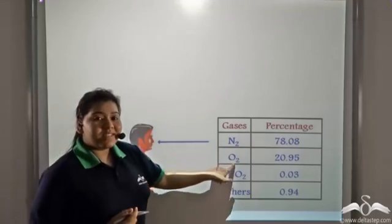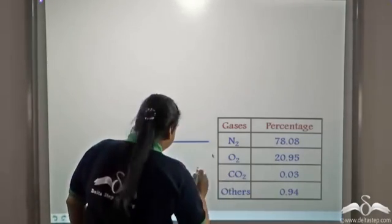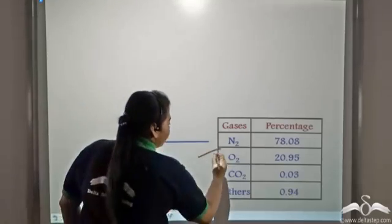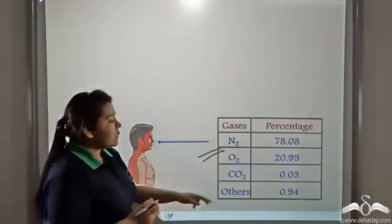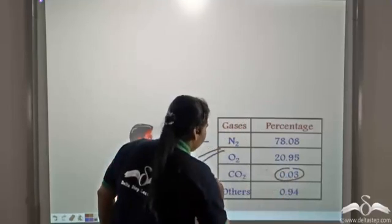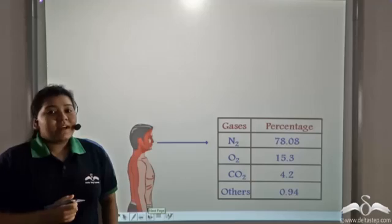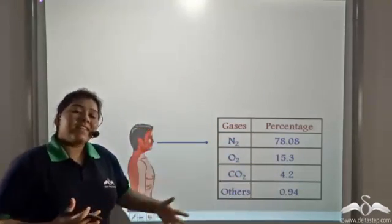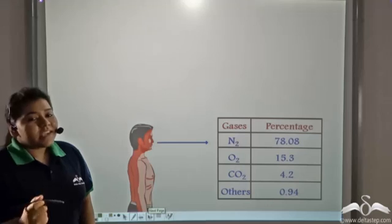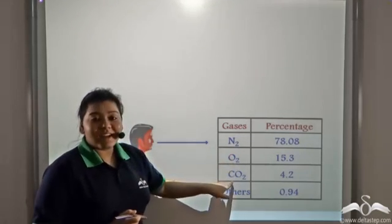Now notice the percentage of oxygen is 20.95% whereas the percentage of carbon dioxide is 0.03%. This is the percentage of gases in the air that we are breathing out. Carefully notice the percentages of oxygen and carbon dioxide.